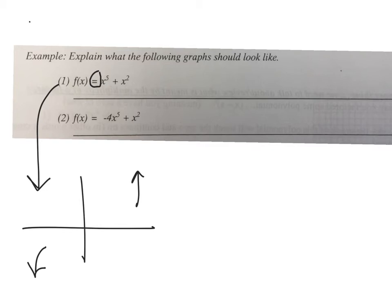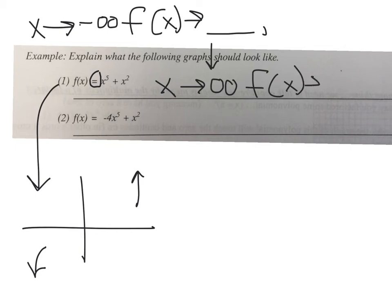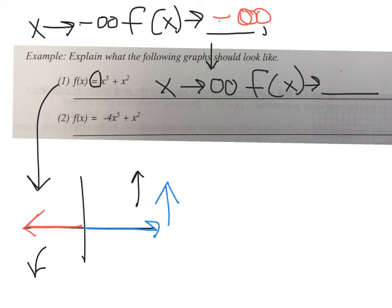The way we write end behavior always starts the same: as x approaches negative infinity, f of x approaches something. As x approaches positive infinity, f of x approaches something. For example 1, as x approaches negative infinity, f of x approaches negative infinity as well. And as x approaches positive infinity, f of x approaches positive infinity.